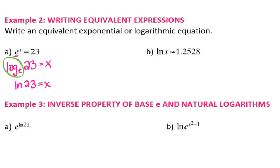For this particular example, you're not evaluating these — you're just switching back and forth between the forms. So your answer is just going to stay as natural log of 23.